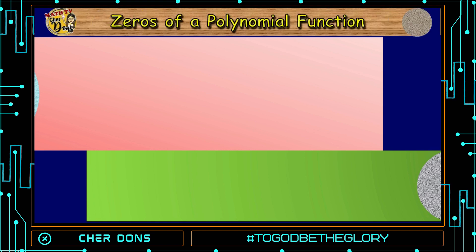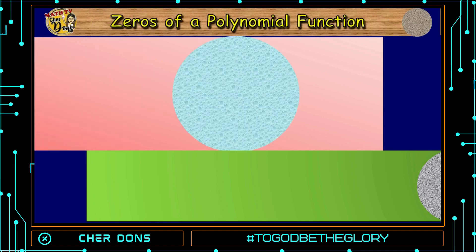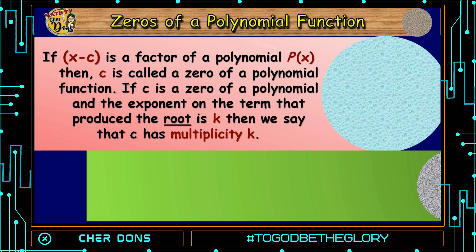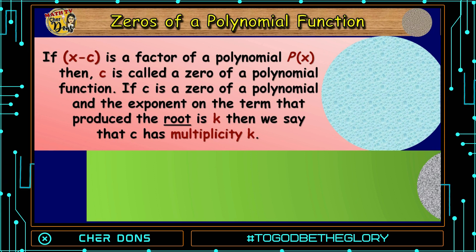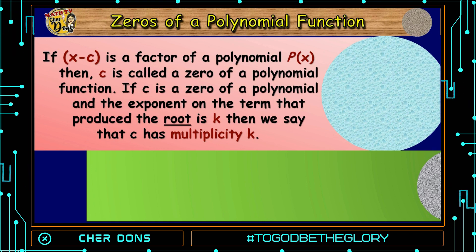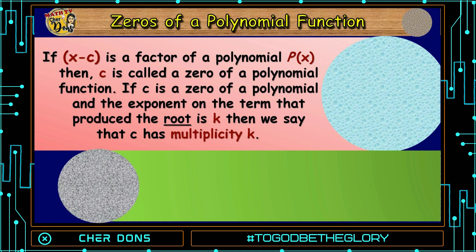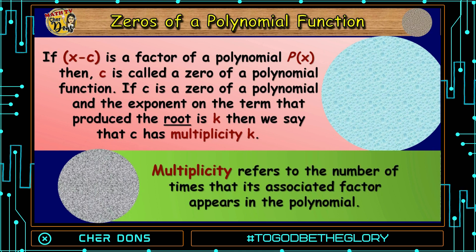Zeros of a polynomial function: if x minus c is a factor of a polynomial p of x, then c is called a zero of the polynomial function. If c is a zero of a polynomial and the exponent on the term that produced the root is k, then we say that c has multiplicity k. Multiplicity refers to the number of times that its associated factor appears in the polynomial.